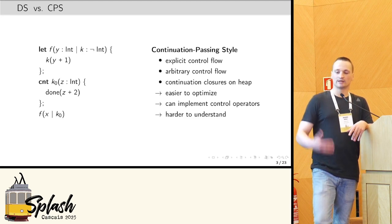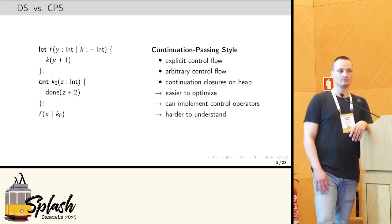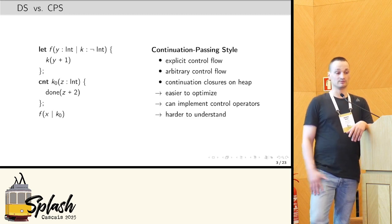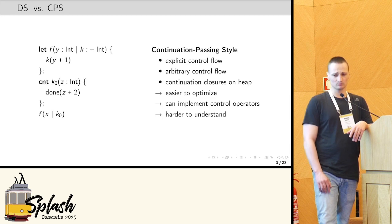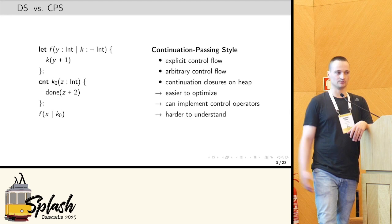So this explicit control flow often makes it much easier to optimize programs, in particular when control flow is complex. And it's easy to actually implement complex control flow in continuation passing style because we always have the continuation at hand, right?